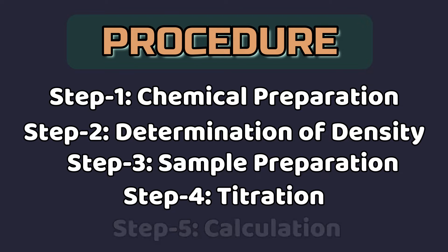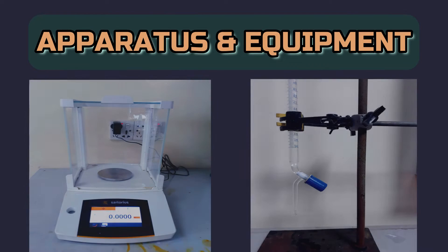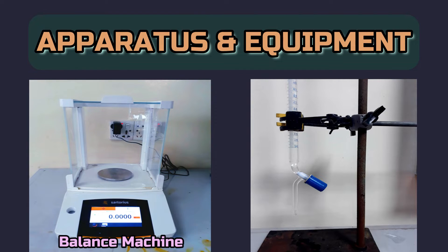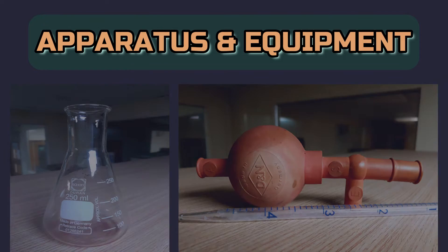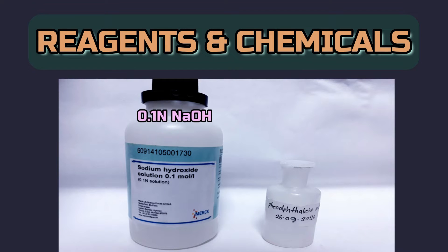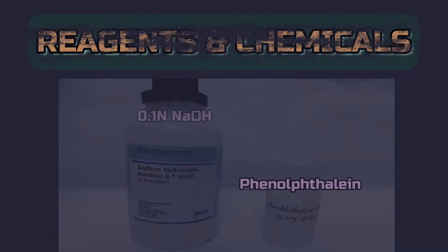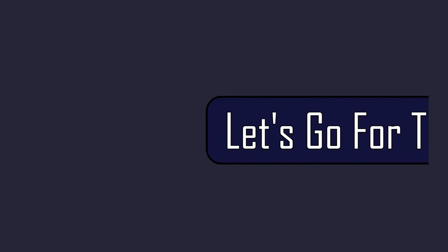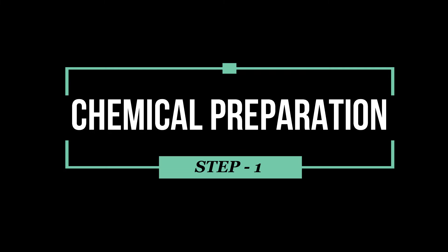We need some apparatus and chemicals such as balance machine, burette, stand, conical flask, pipette with filler, 0.1 normal sodium hydroxide solution, and phenolphthalein indicator solution. Let's start the analysis.